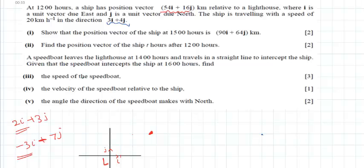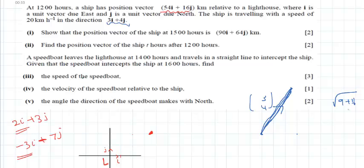Looking at the grid, counting from a starting point — 3 units horizontal and 4 units vertical — the ship moves in that diagonal direction. This direction vector has magnitude found by Pythagoras: root of 3 squared plus 4 squared equals 5. So the direction vector 3i plus 4j has a magnitude of 5 kilometers per hour.